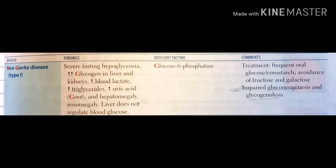What will happen in this case is that there will be severe fasting hypoglycemia. Because the enzyme glucose-6-phosphatase is deficient, there will be increased glycogen which will get accumulated in the liver and kidney, which will later lead to hepatorenomegaly.